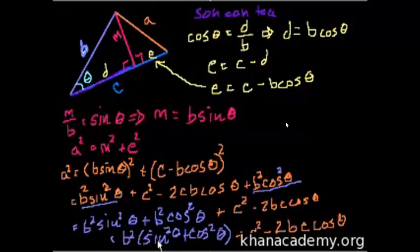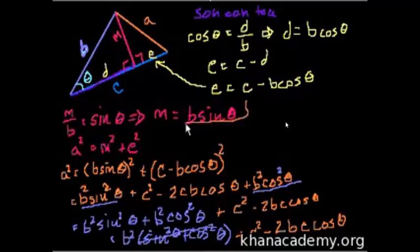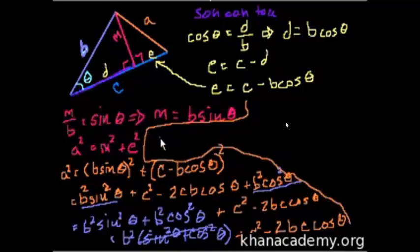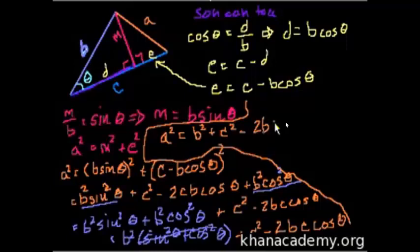Well, this thing, sine squared plus cosine squared of any angle is one. That's one of the earlier identities. That's the Pythagorean identity right there. So this equals one. So then we're left with, we're almost there. A squared is equal to, this term just becomes one. So B squared, we're just left with a B squared, plus C squared, minus 2BC cosine of theta.